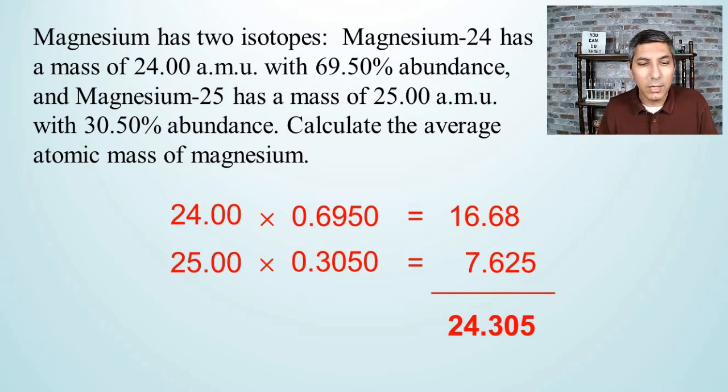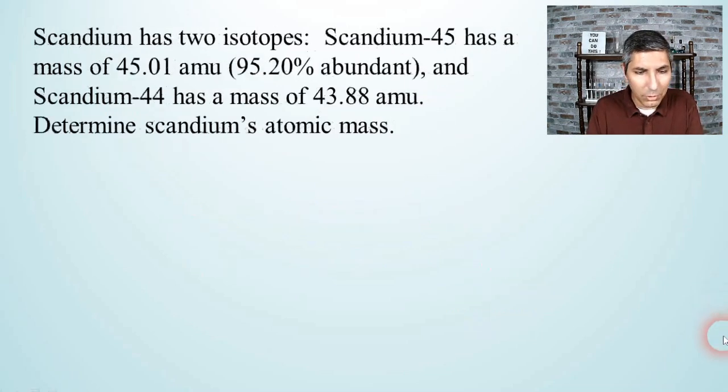Before we go any further, let's just mention that AMU is going to stand for atomic mass units. This is basically a little teeny tiny unit of mass that we use to measure the masses of atoms. One AMU is approximately the mass of a proton or a neutron, give or take a little bit. Technically speaking, I think an AMU is considered to be exactly one twelfth the mass of a carbon-12 atom, but for our purposes, we can say it's about the size of a proton. Let's do one more example here.